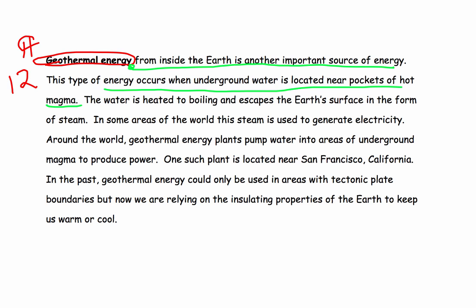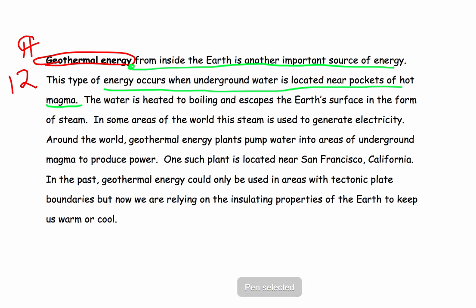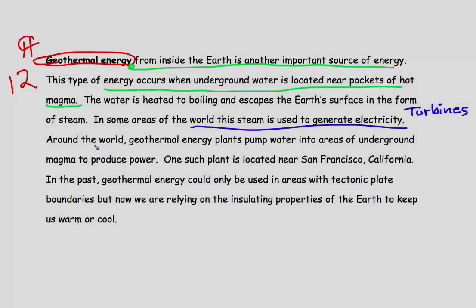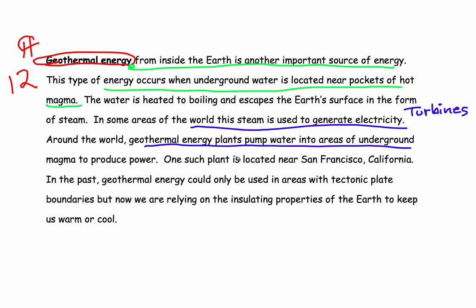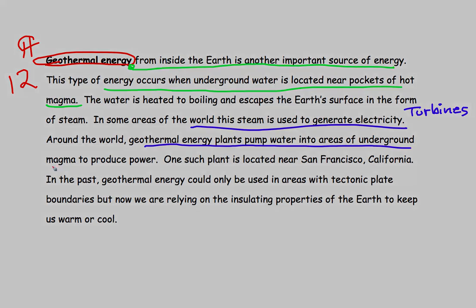So let's look at a couple of these types of uses for geothermal. Get your blue colored pencil. The steam is used to generate electricity. Geothermal energy plants pump water into areas of underground magma to produce this steam.